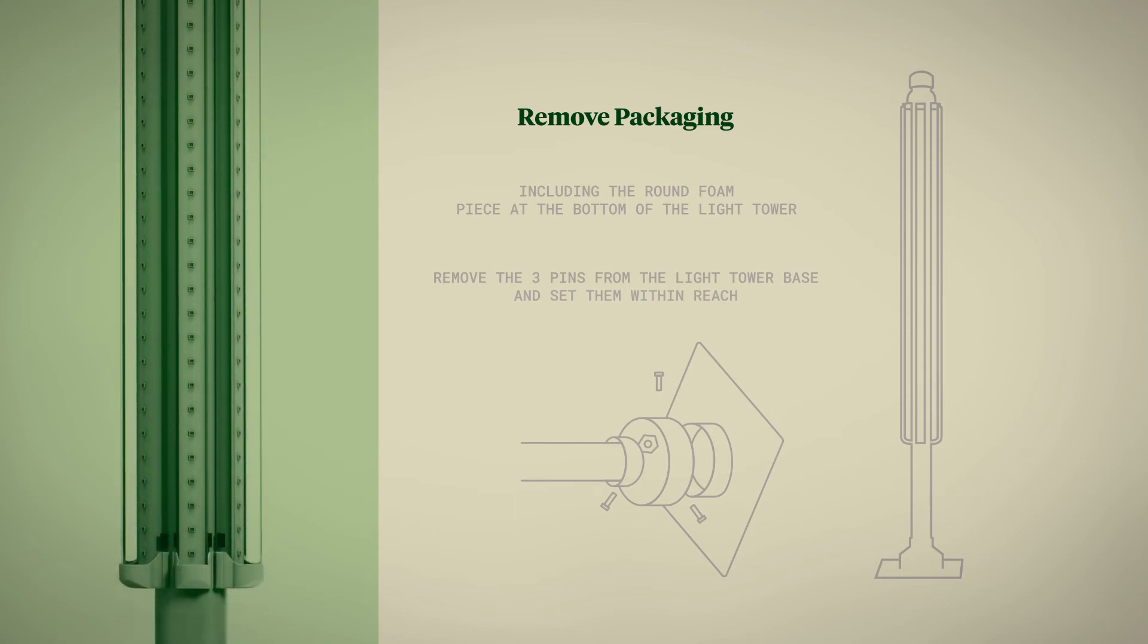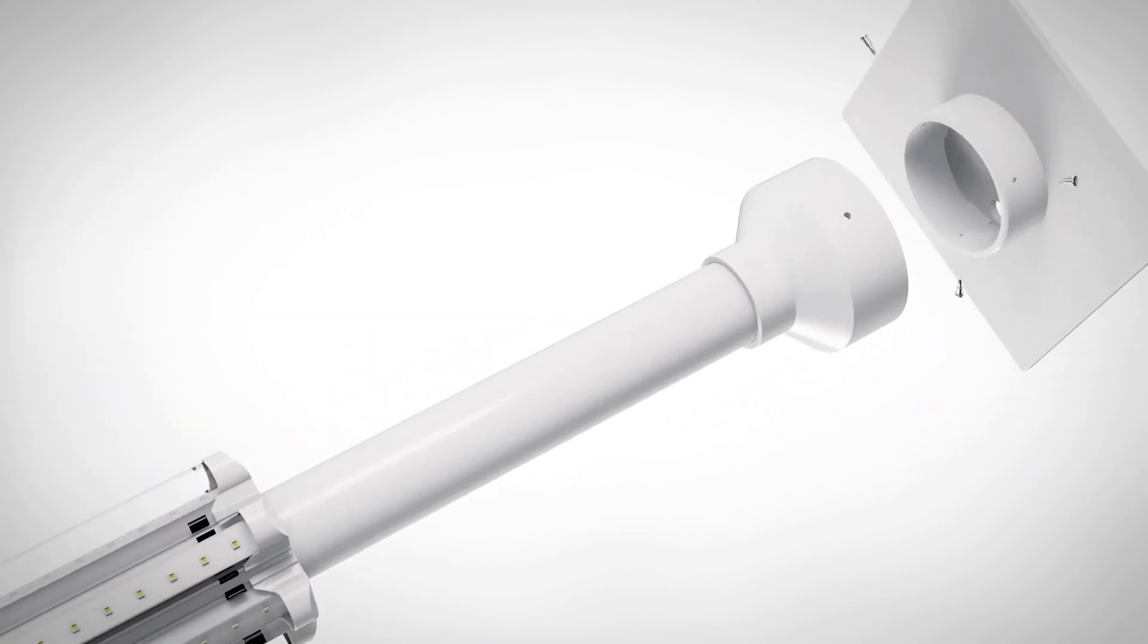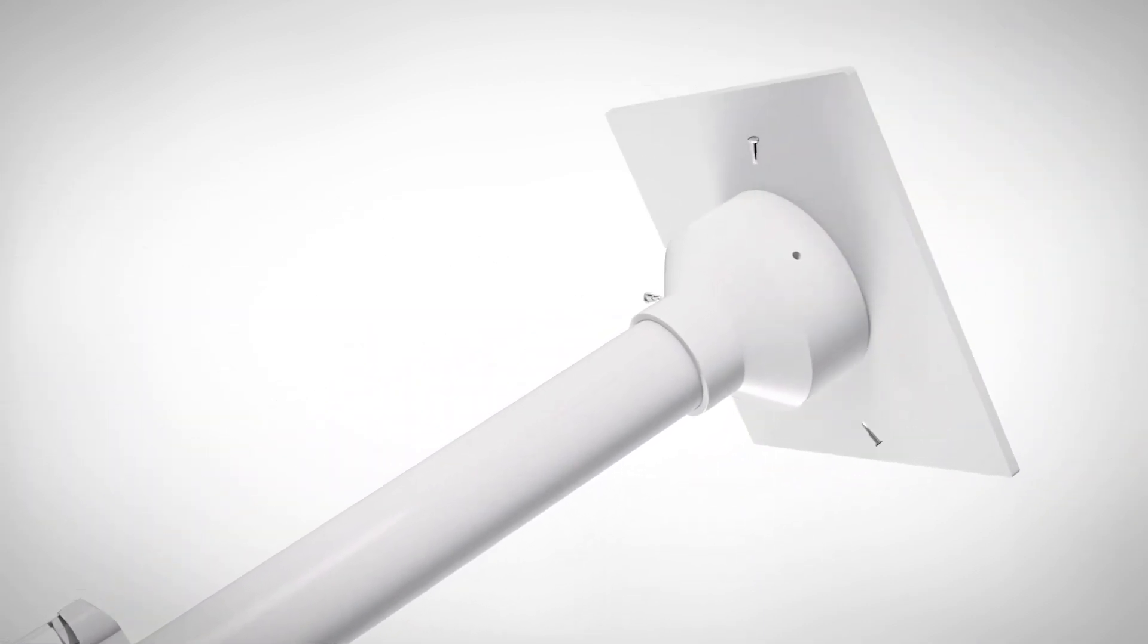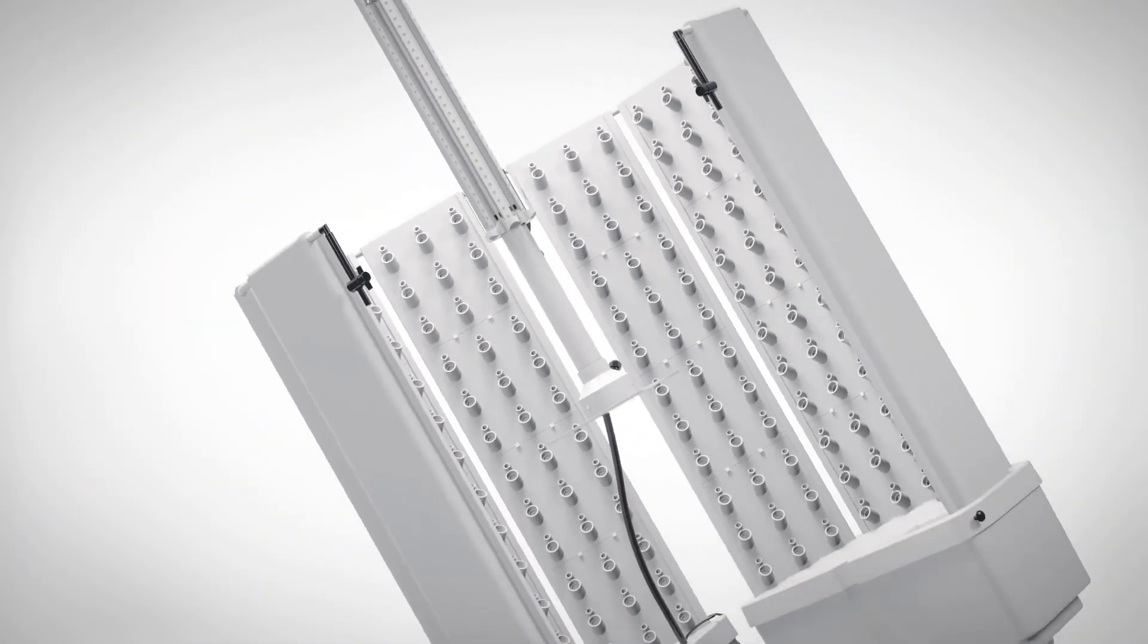While the light tower is laying on the ground, lift up the bottom of the light tower and slip on the base. Turn until one side is flat on the ground and the pinholes align. Insert the pin securely and repeat the process for the remaining two pins. Grab the light tower by the handle and stand it up.